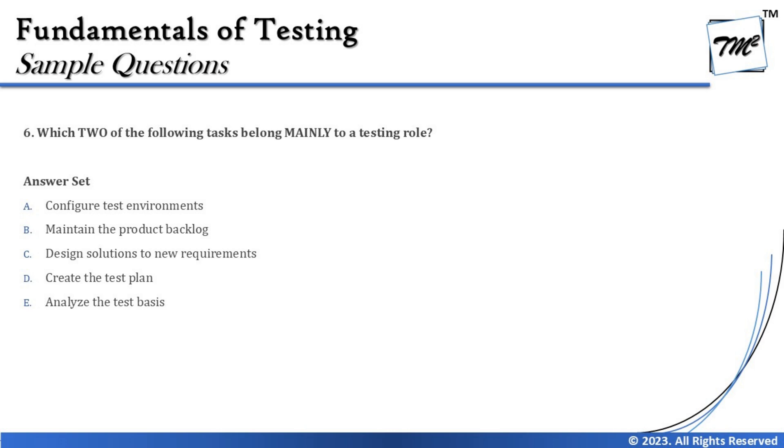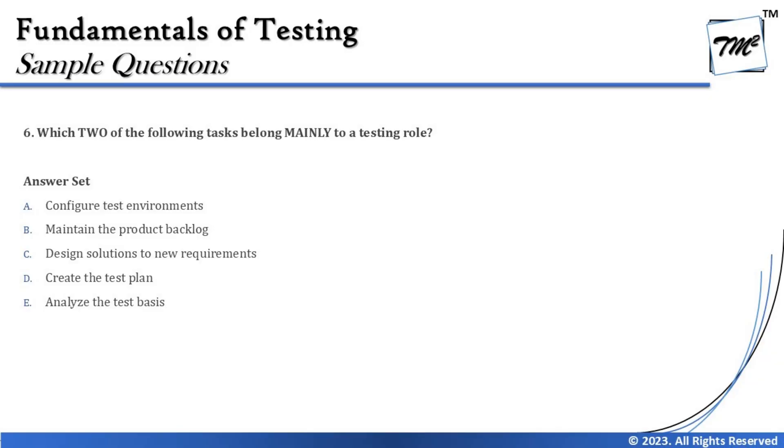Option A is 'configure the test environment' — that looks like it could belong to the testing role. Option B is 'maintain the product backlog' — from agile fundamentals, the Product Owner is responsible for maintaining the product backlog by interacting with business representatives and creating stories for the team. Maintaining backlog items is the PO's responsibility, not the tester's.